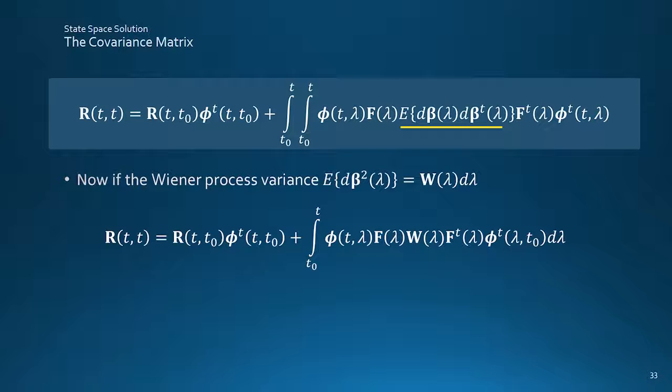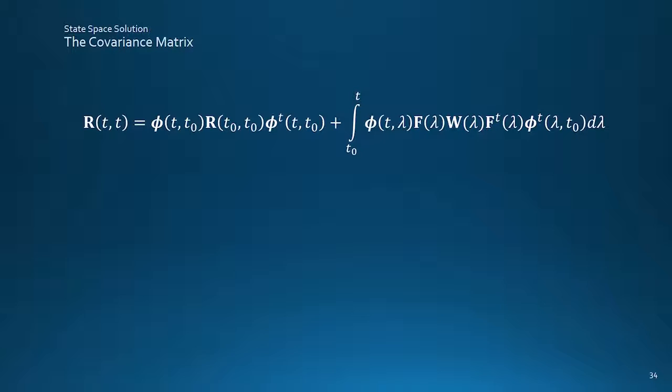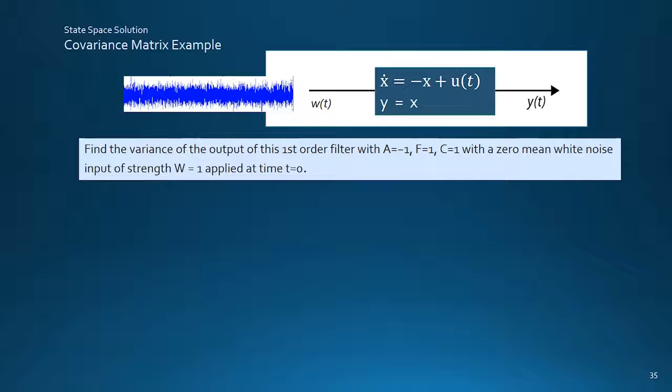Using the previous result for the variance of the Wiener process then loses one integral to give this. And finally, the initial covariance can be replaced using the previous result for the development of the covariance function from the initial time covariance matrix. All that remains is to relabel RTT and RT0T0 by PT and PT0. And now this, at rather long last, is a solution for the covariance matrix at time T, in terms of both the initial condition response from the initial time covariance matrix PT0, and the driven response from the white noise input of strength W.